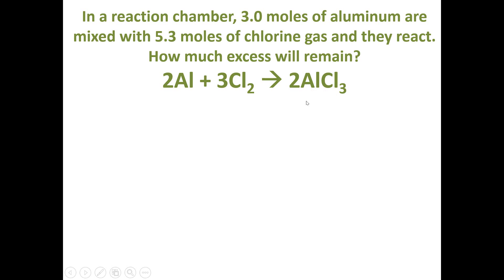Not aluminum trichloride, just aluminum chloride. This is an ionic compound. So we have a reaction chamber with 3 moles of aluminum mixing in with 5.3 moles of chlorine gas, and we want to calculate how much excess will remain.